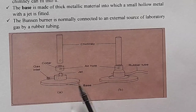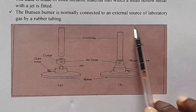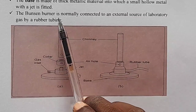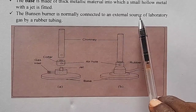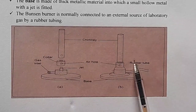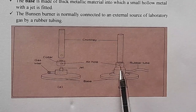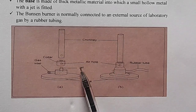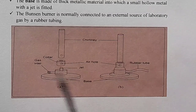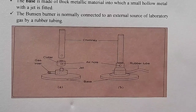This is the base of the Bunsen burner. On the other side, when it is closed, the Bunsen burner is connected to an external source of laboratory gas by the rubber tubing. This is the rubber tubing. This is the base, and the air hole is there. We cannot see the jet and the gas inlet because they are inside, and this is the chimney.